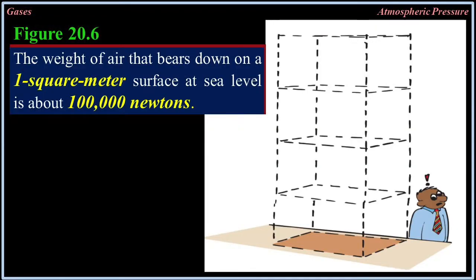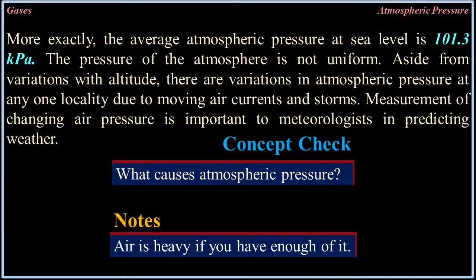Figure 20.6: The weight of air that bears down on a 1 square meter surface at sea level is about 100,000 newtons. More exactly, the average atmospheric pressure at sea level is 101.3 kilopascals. The pressure of the atmosphere is not uniform — aside from variations with altitude, there are variations due to moving air currents and storms. Measurement of changing air pressure is important to meteorologists in predicting weather. Concept check: What causes atmospheric pressure? Note: Air is heavy if you have enough of it.